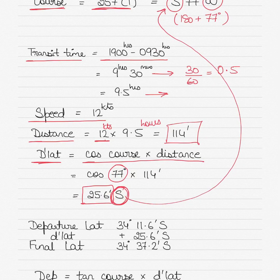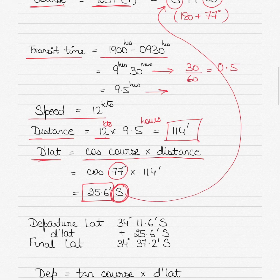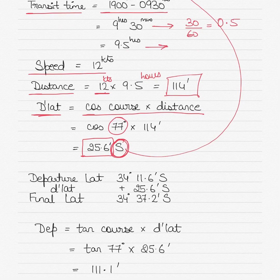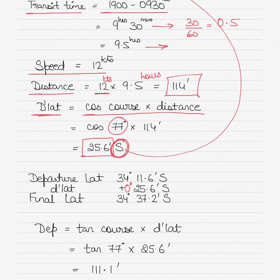The direction is South because we are on a southwesterly course — so D-lat is South. Since 25.6 is less than 60 minutes, the D-lat is 0 degrees 25.6 minutes South. Do not confuse this with degrees — 25 degrees would represent more than 1,500 nautical miles, which is far beyond the plane sailing limit of 600 nautical miles.